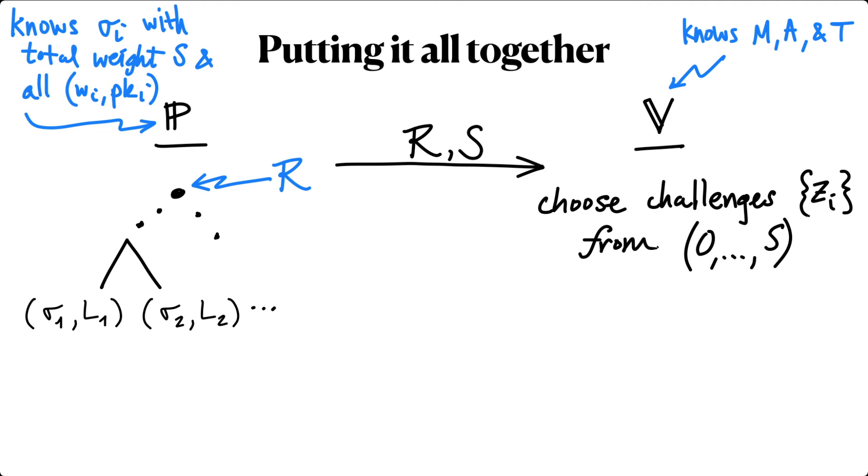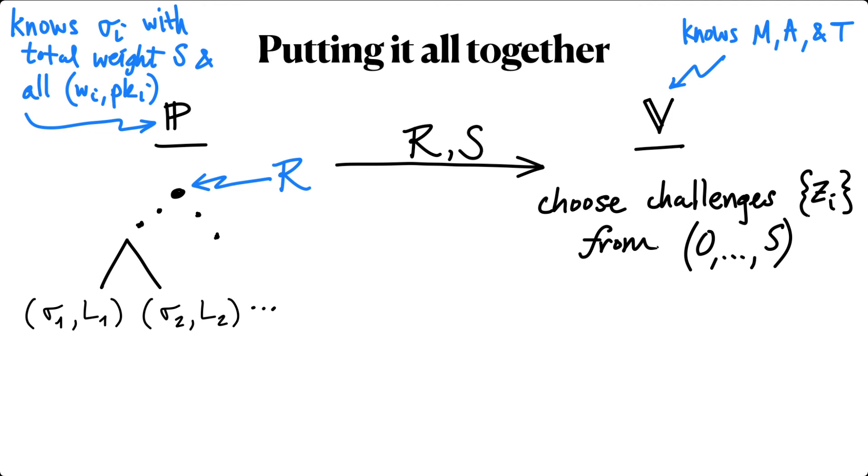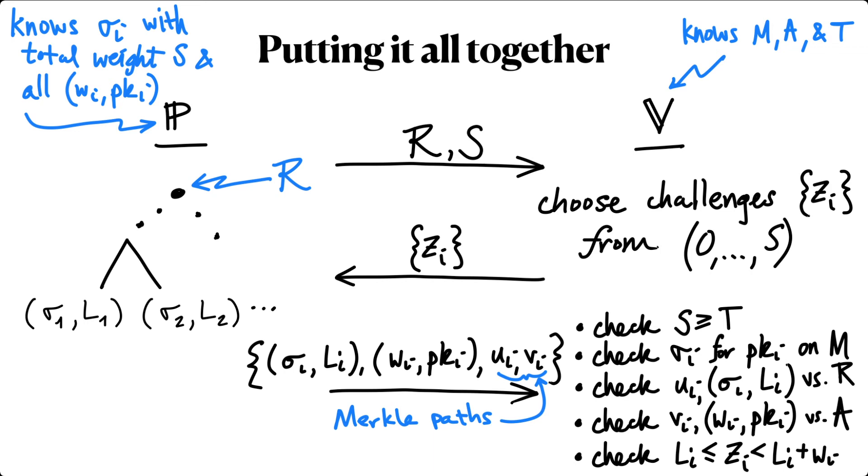The verifier samples challenges Z sub i from the range 0 to S and sends them to the prover. The prover sends the corresponding leaves in the signature and attester trees along with their authenticating paths, and the verifier checks everything.